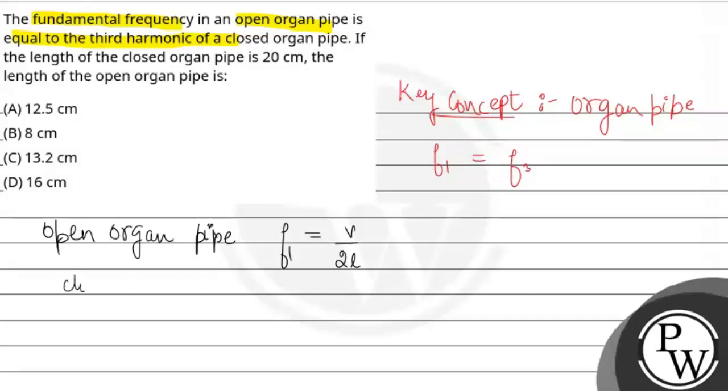Now for closed organ pipe, for third harmonic that is F2 equals N V over 4L. Here N equals 3 because of third harmonic, so 3V over 4L.